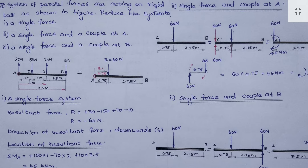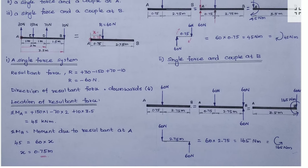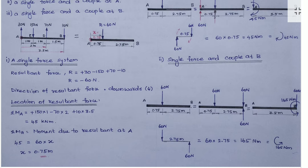We also have to find X — the distance at which the resultant force acts. We have to find the location of the resultant. I am assuming it is acting at a distance X from the left edge A. To find the value of X, we use the moment principle. I am going to find the algebraic sum of moments of all forces about point A. At point A, we consider it as a hinge.